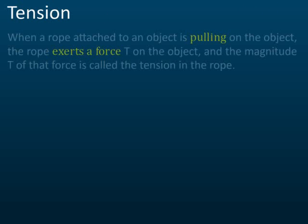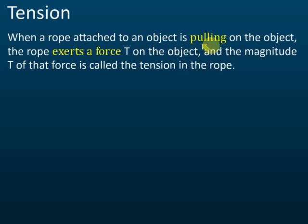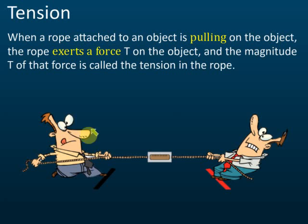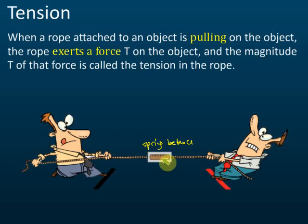What is tension? When a rope attached to an object is pulling on the object, the rope exerts a force on the object, and the magnitude T of that force is called the tension in the rope. For example, there are two men pulling a rope, and at the center of the rope there is a spring balance used to measure force. The spring balance shows a reading of 80 newtons — that 80 newtons is called the tension of the rope.